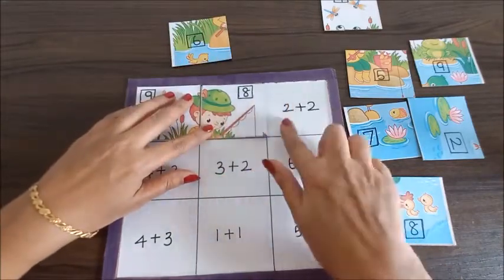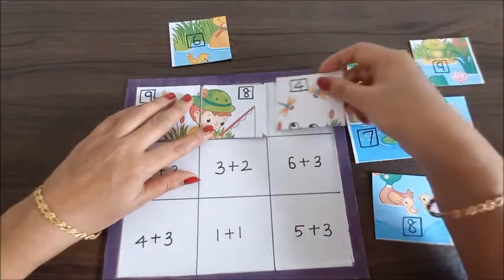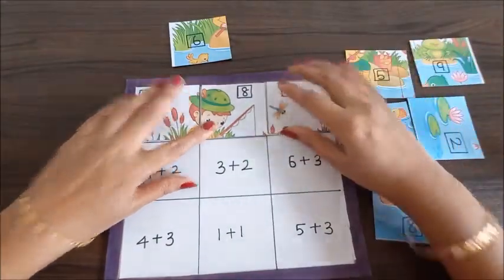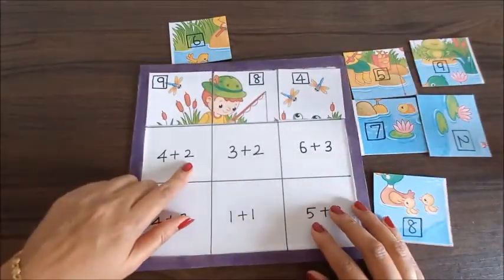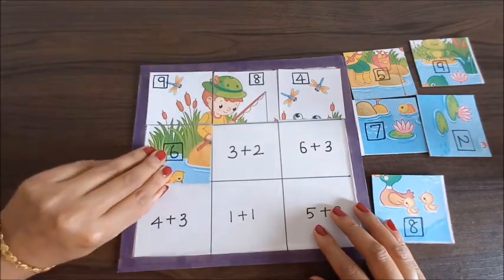2 plus 2 is 4. We'll search for 4, here it is. Next is 4 plus 2, which is 6.